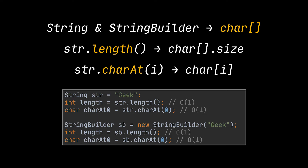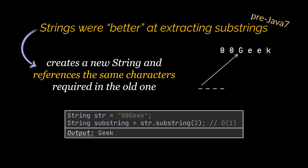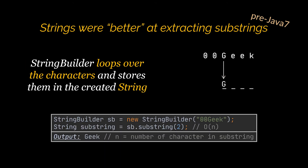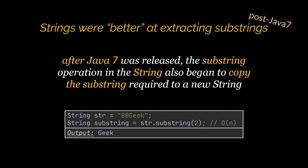The distinction appears when extracting a specific substring or concatenating characters. For the substring case, pre-Java 7 it was better to use strings because, as strings are immutable, the substring method only had to build a new reference pointing to the same underlying char array. With a StringBuilder, you'd have to loop over characters to store them in a new string. However, after Java 7, the substring operation on strings also became O(n) — n being the number of characters in the substring — as it also copies the extracted characters into a new string.